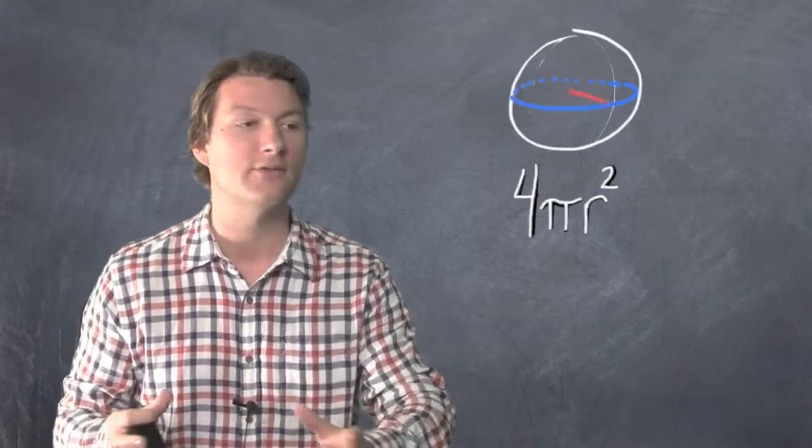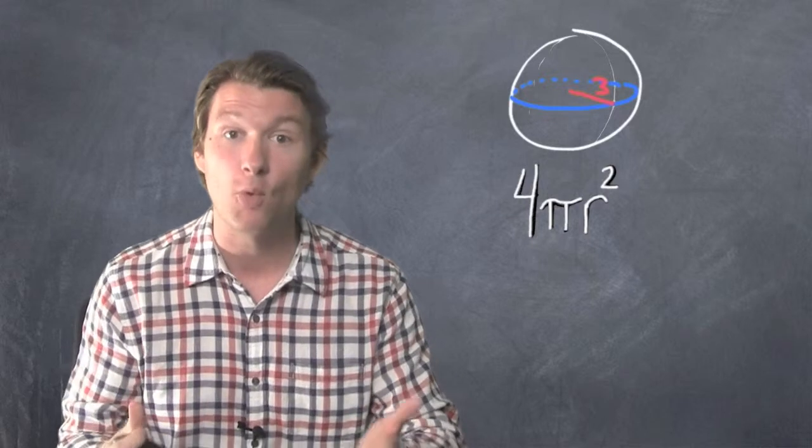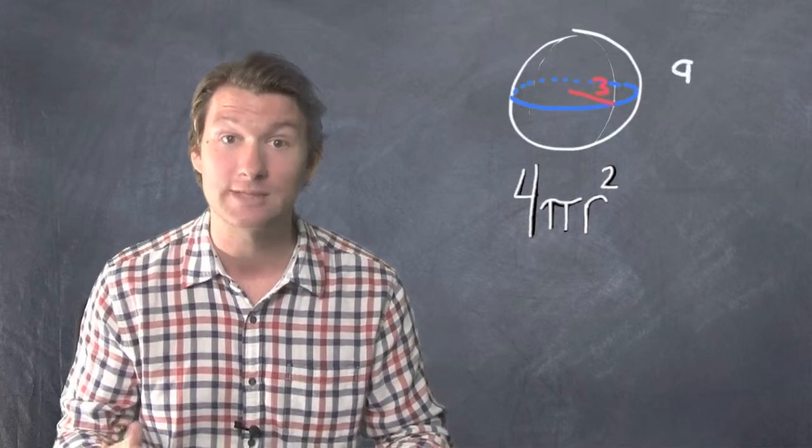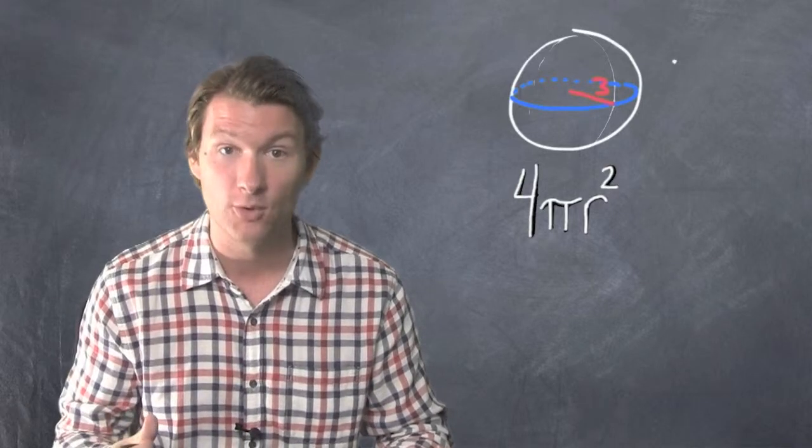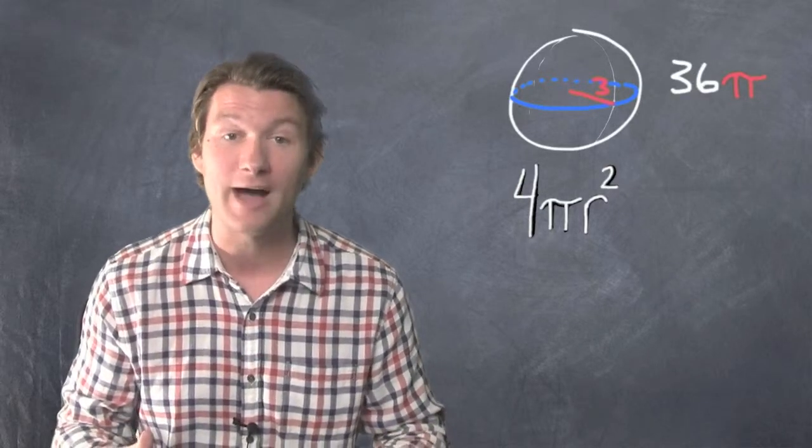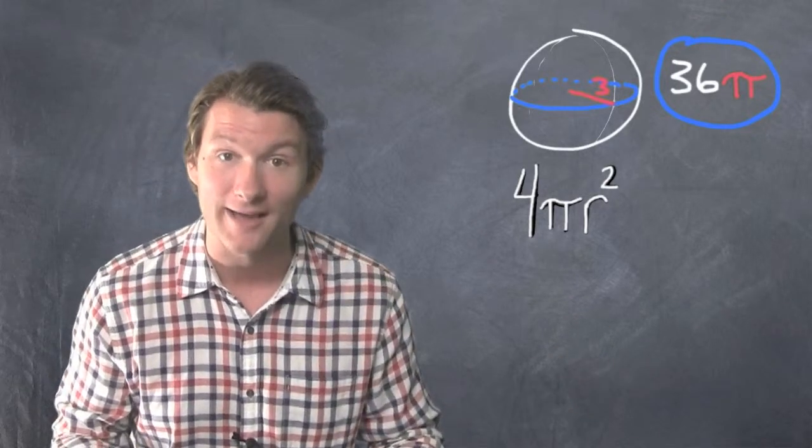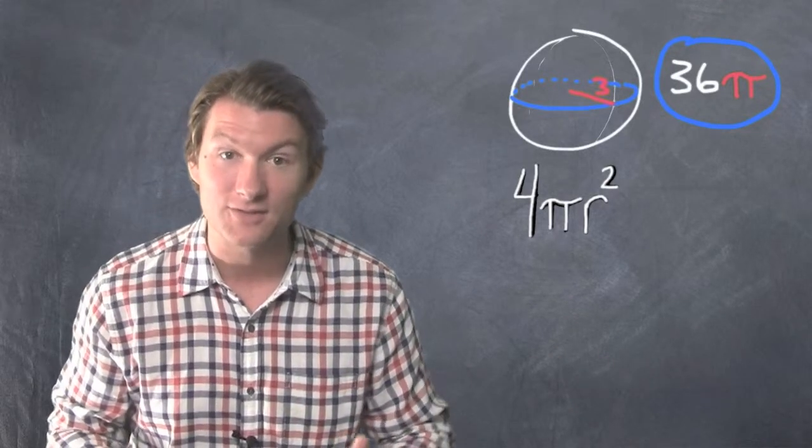One more example. Let's say the radius is 3. We do 4πr². Start by doing r²: 3 times 3 is 9, multiply that by 4, 36. Slap a π on there: 36π. If the radius of a sphere is 3, the area is 36π. That's how you find the area of a sphere.